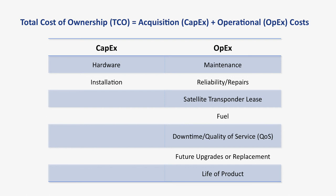In contrast, opex are the recurring items — generally per-year type of items. They would include transponder cost, induced fuel cost, maintenance cost, reliability to the extent it requires changing the equipment out, and the overall lifetime of the product. You want to have products that have really long legs to them so that you don't have to replace them very often. Obviously, you're trying to keep these systems functioning, not breaking, and reducing the maintenance costs of them, which is a big part of this.